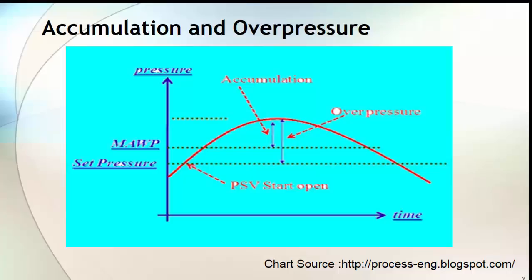Accumulation is the pressure above the Maximum Allowable Working Pressure that the vessel experiences during a high pressure event. Hence when we say accumulation, we are talking about the vessel or the equipment. On the other hand, overpressure is the pressure above the set pressure of the Pressure Safety Valve that the PSV experiences during a high pressure event. Hence when we say overpressure, we are talking about the Pressure Safety Valve.